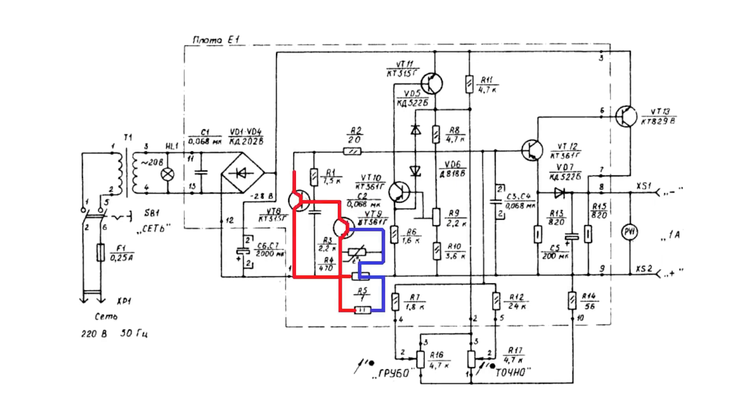Following it, the second transistor will also open, which will dampen the signal at the base of the control transistor, causing it to start closing, and consequently the output transistor will also close.